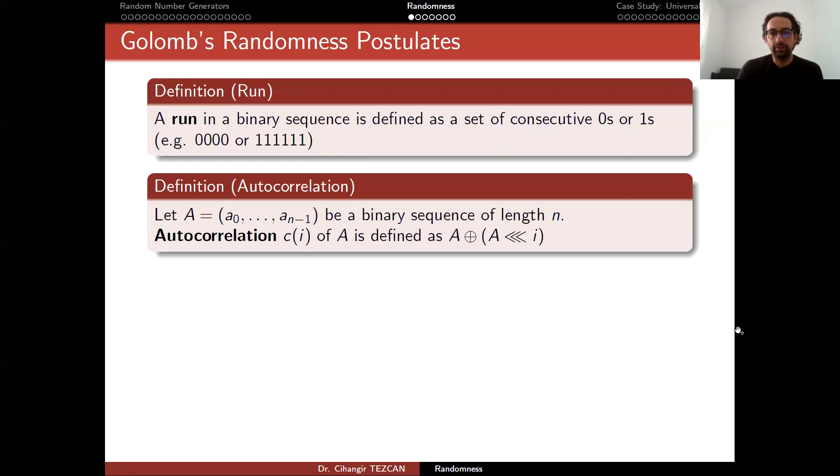Another definition is autocorrelation. When you rotate a sequence and then XOR it with itself, we call it its autocorrelation, which is defined like this. So let A be the sequence. These ai's are zeros or ones. So it is a binary sequence of length n. Autocorrelation ci of A is defined by A XOR to itself, which is rotated i bits to some direction.